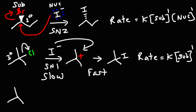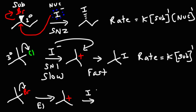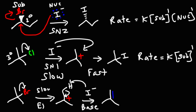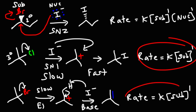Now let's talk about the E1 reaction, using tert-butyl bromide. For the E1 reaction, the first step is ionization — the leaving group is going to leave and we're going to get a carbocation. Then the base is going to react. Iodide is not behaving as a nucleophile in the E1 reaction; it's going to behave as a base. Bases abstract protons, and so we're going to get an alkene. The first step is the slow step, and the base is not part of the slow step. So like the SN1 reaction, the E1 reaction depends on one thing: the concentration of the substrate.